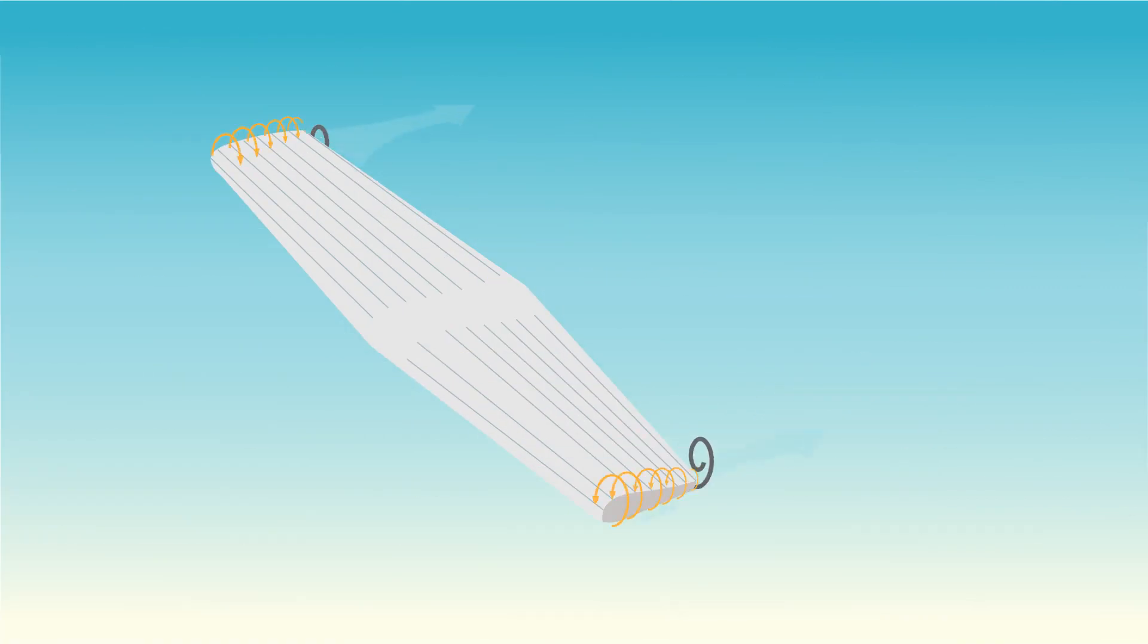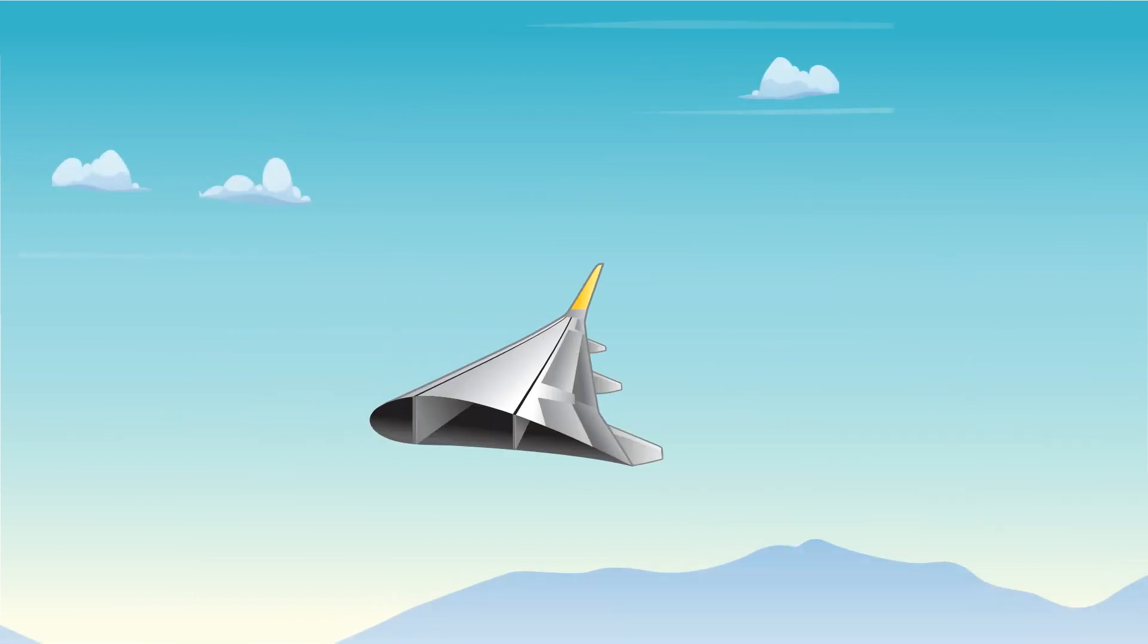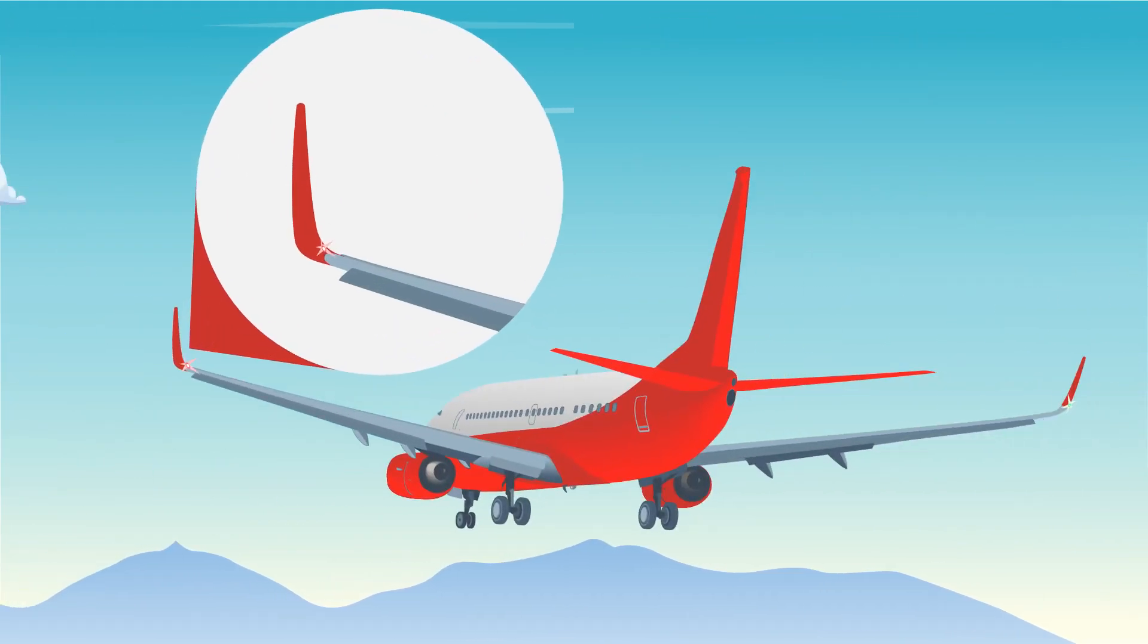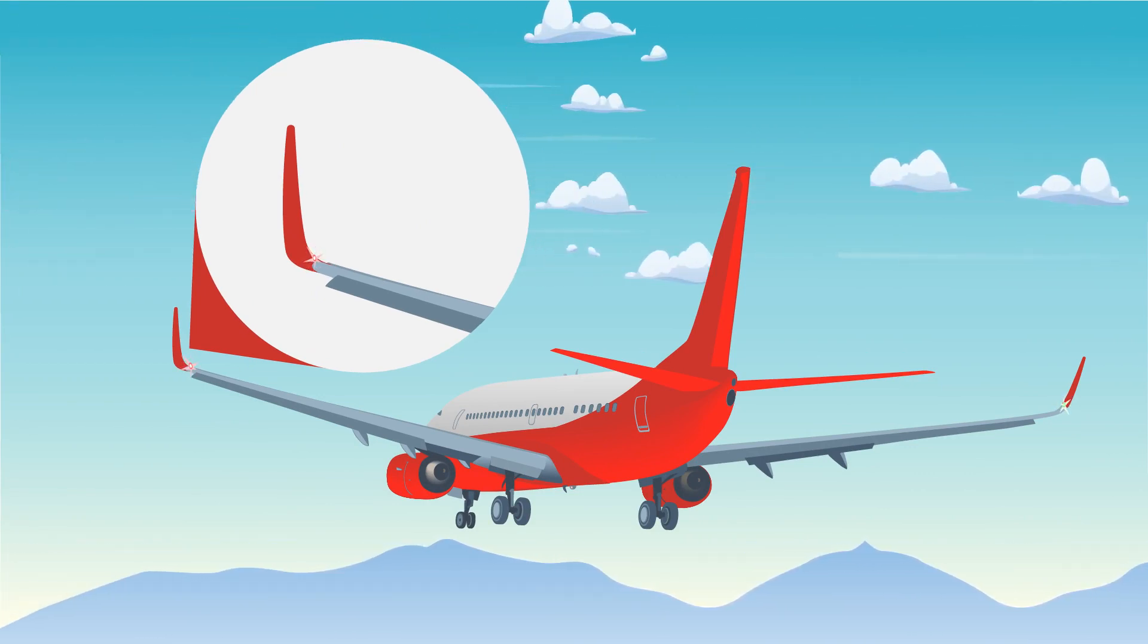A third, seldom discussed aspect of lift involves air which escapes from the high pressure area under the wing around the tip of the wing to the lower pressure area above the wing. This circular flow, called a wingtip vortex, creates a downwash which reduces lift. We may see fancy wingtip devices designed to help minimize this vortex phenomenon, including something as minimal as a slightly curved wingtip to something as dramatic as the six-foot winglets on many airliners.